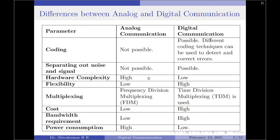The next parameter we have is hardware complexity. Analog communication has complex hardware whereas digital communication has less complex hardware. Since analog communication has complex hardware, the flexibility of analog communication is quite low, whereas for digital communication it is considerably high.